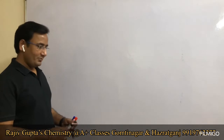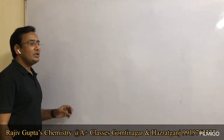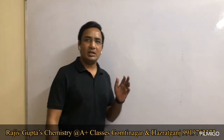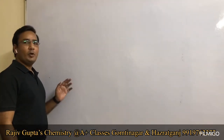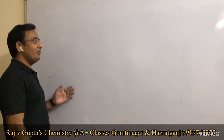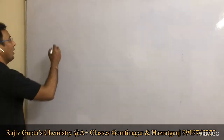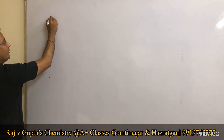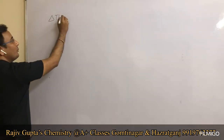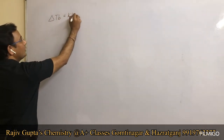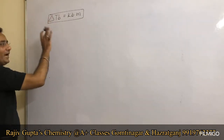Hello dear students, welcome again to the Foundation Series videos. In the last video we were discussing colligative properties — relative lowering in vapor pressure and elevation in boiling point. In elevation in boiling point we have already derived this formula: ΔTb, that is elevation in boiling point, is equal to Kb into m.